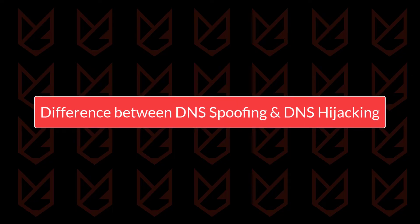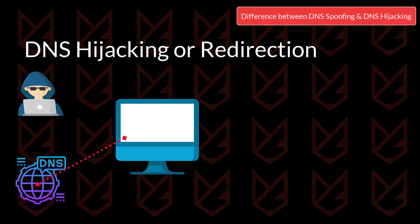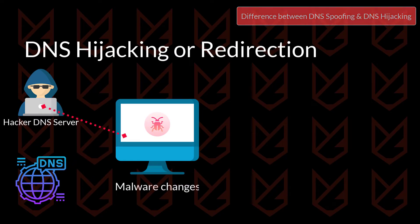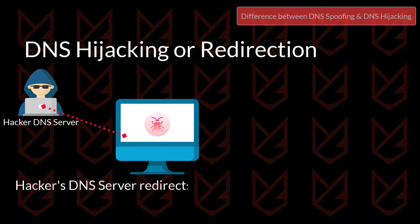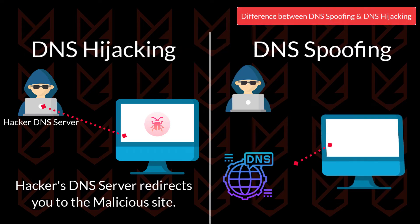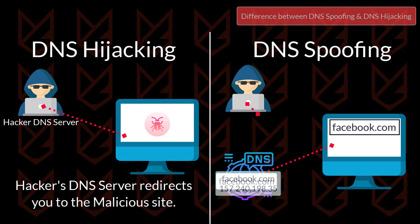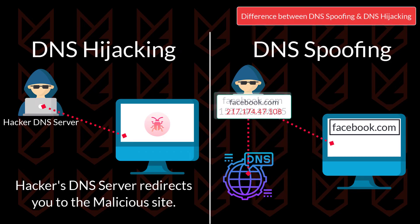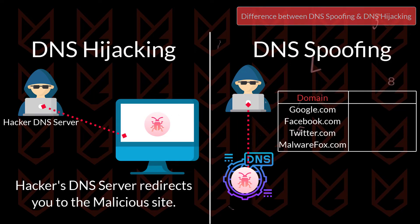So what is the difference between DNS spoofing and DNS hijacking? DNS hijacking typically involves malware infection that changes the DNS settings on the user's computer. The malware replaces the TCP/IP DNS server address with a malicious one, so all DNS queries are sent to the hacker's DNS server. They can redirect you to a malicious server on entering a specific domain or every time you access a site. While DNS spoofing is an act where hackers spoof DNS records — they can use DNS poisoning to spoof the local DNS cache, intercept communication between your PC and the DNS server, or hijack the DNS server and spoof the records directly there.